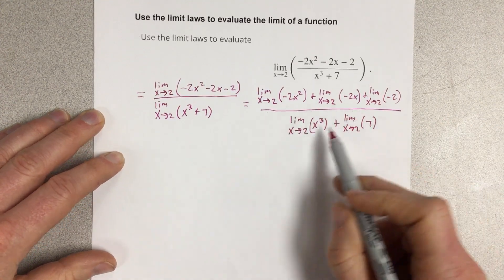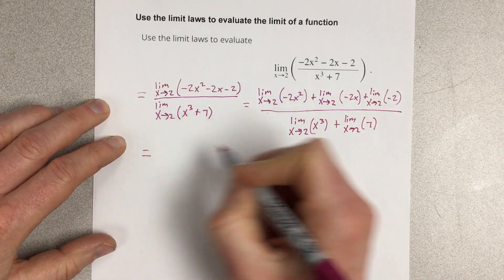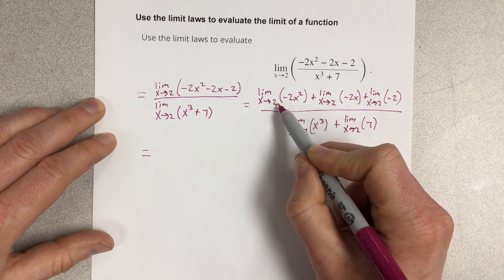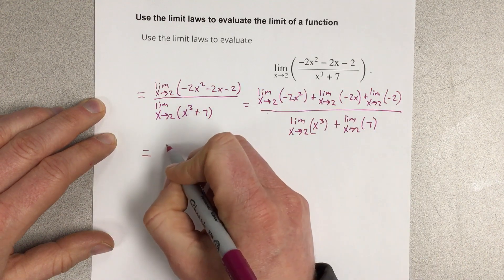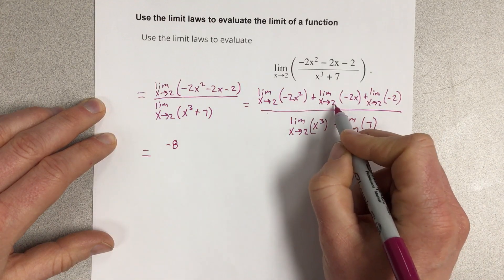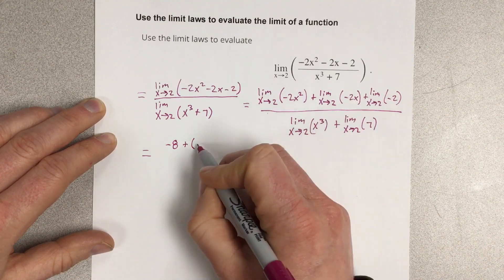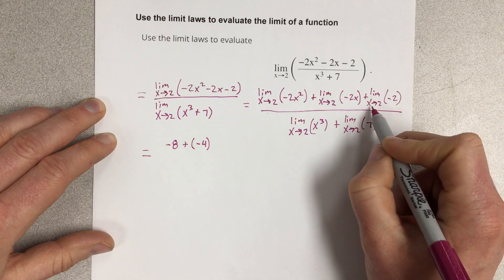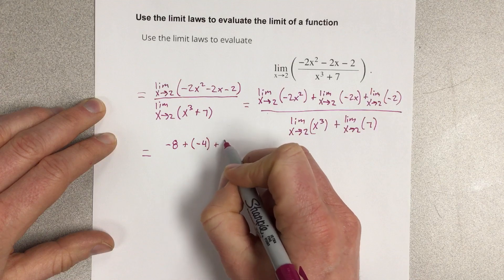So we're going to evaluate each of these limits individually. If I evaluate the limit as x approaches 2 for negative 2x squared, plug in 2 — 2 squared is 4, so that's negative 8. Plus plug in 2 here: that's negative 4, because that's 2 times negative 2. Then the limit as x approaches 2 for negative 2 is just negative 2, so plus negative 2.